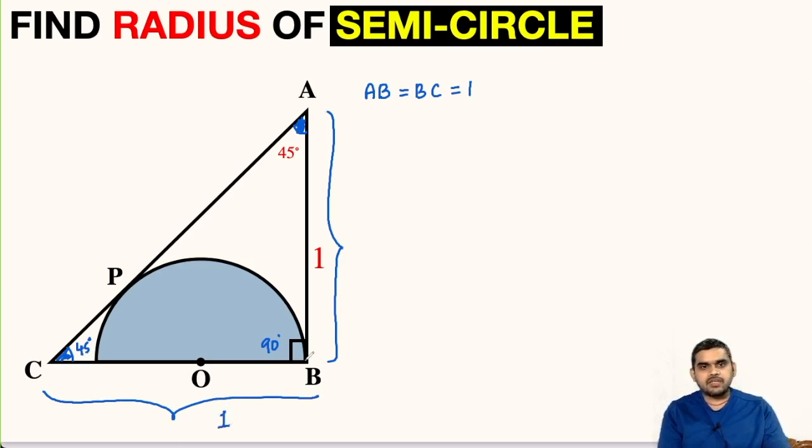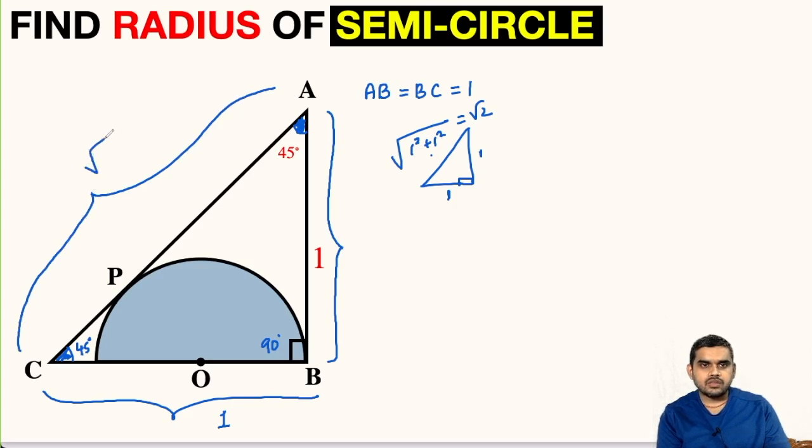Now if AB is one unit and BC is one unit, by Pythagorean theorem, AC will be square root of one squared plus one squared, that is root 2. So this entire length AC is root 2.